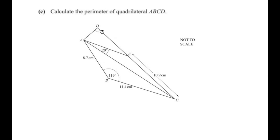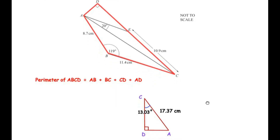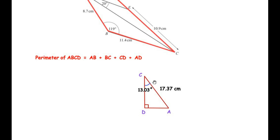Moving on to the next sub-question: calculate the perimeter of quadrilateral ABCD. The perimeter is AB + BC + CD + AD. We have the lengths of AB and BC, but CD and AD are missing. To find these, we use right-angled triangle ADC, since angle D is 90°. We redraw this right-angle triangle with angle ACD = 13.03°, angle D = 90°, and hypotenuse AC = 17.37 cm.